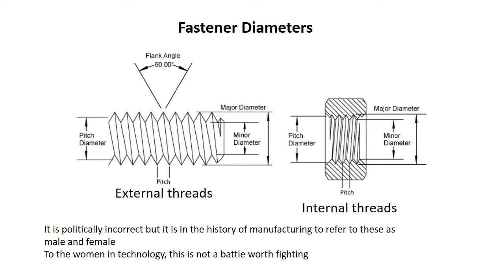The major diameter is the peak-to-peak distance. If you measure that major diameter on a screw, you can figure out what size it is. The minor diameter is just the solid part of the screw. From small to large, the ratio of the distance between the major diameter and the minor diameter stays the same.